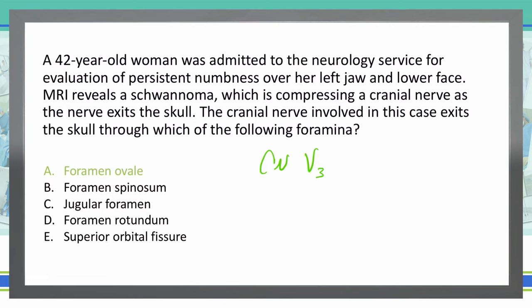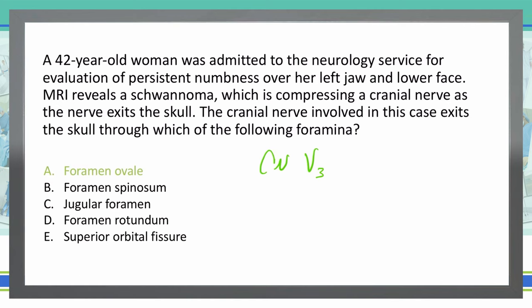So this schwannoma — we don't have to know anything about schwannomas, we don't have to know anything about causes or anything else. This is just telling us it's compressing that particular cranial nerve as it exits the skull. This is just a specific neuroanatomy question: V3 causes numbness on the ipsilateral jaw and lower face.